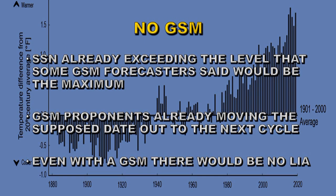One thing I think is safe to conclude is that there's going to be no grand solar minimum. The sunspot number is already exceeding the level that some grand solar minimum forecasters said would be the maximum for Solar Cycle 25. Many of them are now beginning to move their forecast for the grand solar minimum to the next cycle, Solar Cycle 26 — and I don't think they'll have much more success with that. Even if there were a grand solar minimum, there would be no little ice age; that linkage is completely fictitious. So, until next time, stay safe and goodbye.